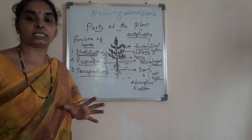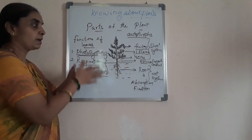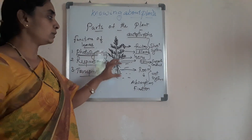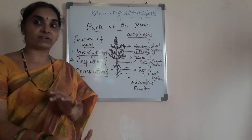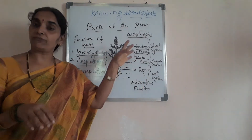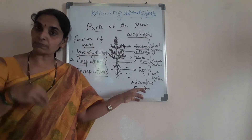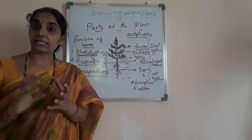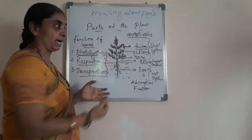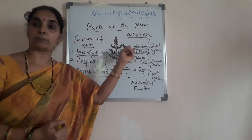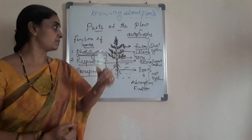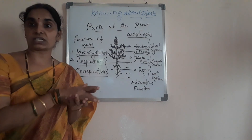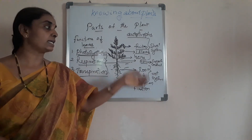Hope you have understood the different parts of the plant. Let me repeat them all. The plant consists of two systems: root system and shoot system. Roots help in absorption of water and mineral salts from the soil and fix the plant firmly into the soil. The stem bears all the other parts of the plant and conducts the absorbed water to all other parts. Functions of the leaves are photosynthesis, respiration, and transpiration — that is preparation of food, exchange of gases, and release of excess water.